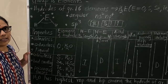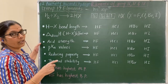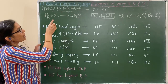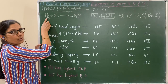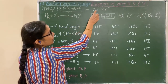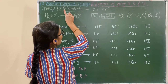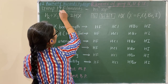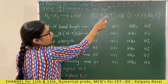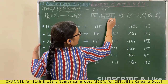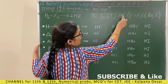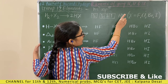Now let us see group 17 elements — the halogens. Halogens react with hydrogen to form hydrogen halides. Their general electronic configuration has seven electrons in the valence shell, and this unpaired electron shares with hydrogen to form HX.